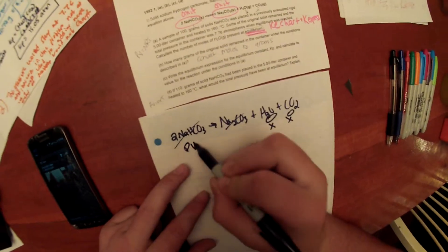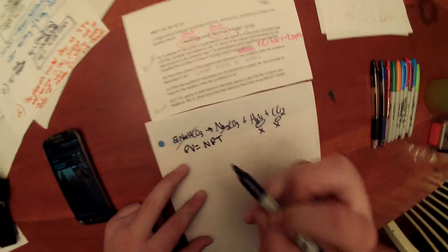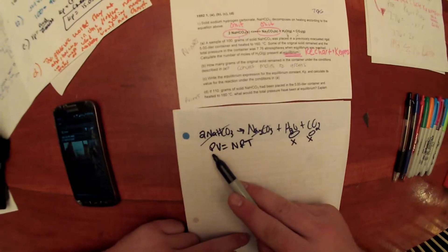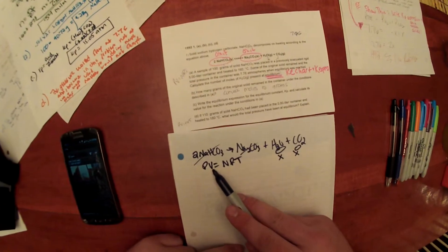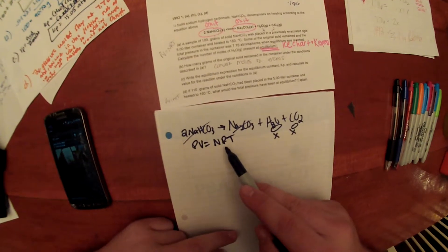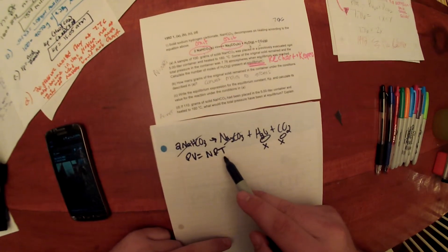To solve this problem, we will be doing the ideal gas law, which is PV equals NRT, where P stands for pressure in atmospheres, V for volume in liters, N for moles, R is a constant of 0.0821, and T is temperature in Kelvin.